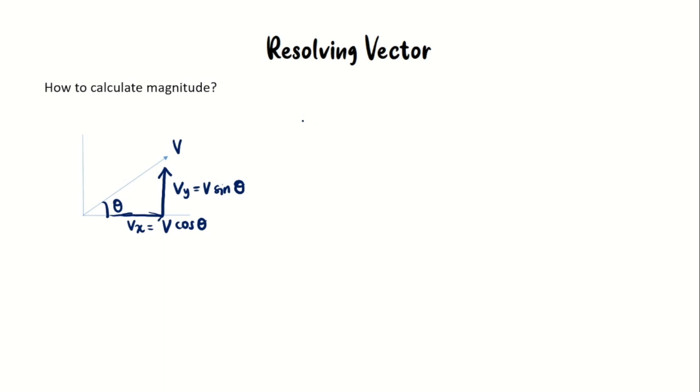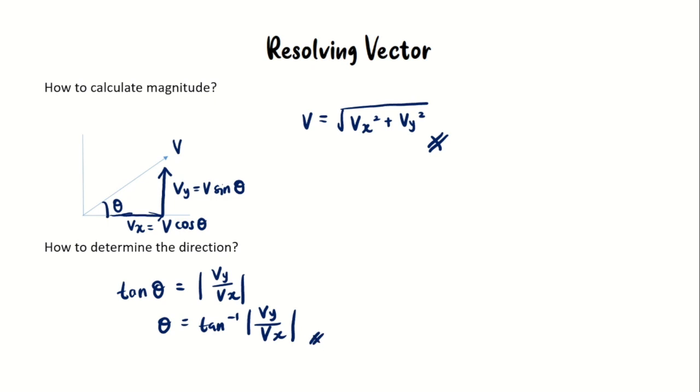By referring to the example, V_x is adjacent to the angle, so we label it as V_x = V cos θ, and V_y = V sin θ. Next, we can calculate the magnitude of the vector by using Pythagoras theorem, and the direction of a vector can be calculated by using shift tan |V_y / V_x|.